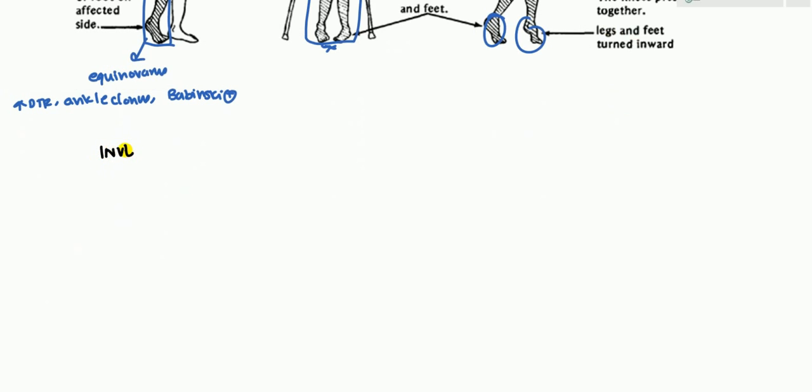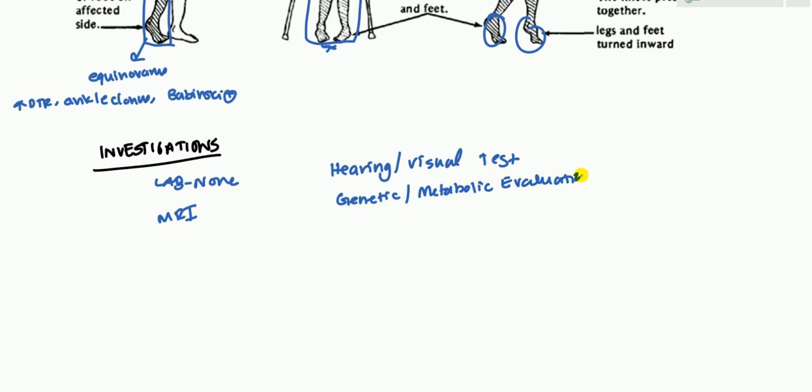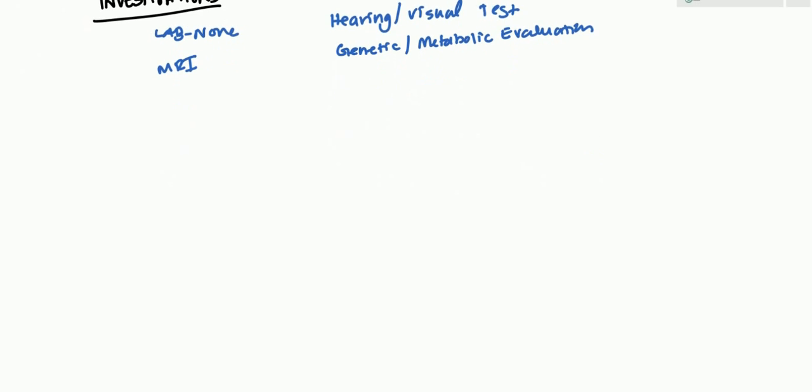So what would you do as far as the workup goes? Pretty much lab workup is pretty useless. There is no lab that will help you figure anything out. So you would want to do an MRI. MRI does help rule out other pathologies. And you also want to do hearing and visual function because that can obviously be affected. And if you want to look for some underlying cause, you can try to do a genetic or even a metabolic evaluation of the patient. That's pretty much investigations.